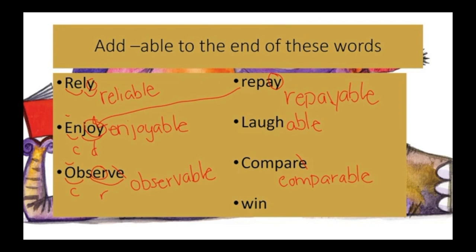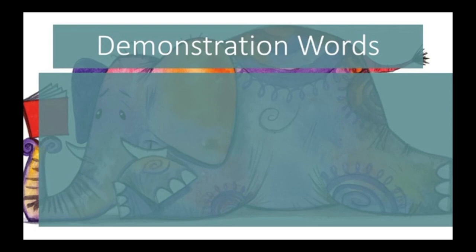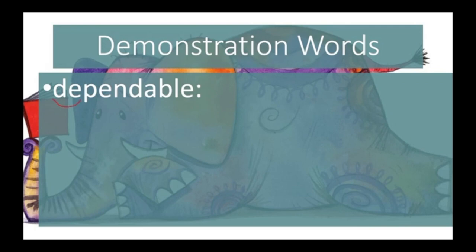For winnable, this one's tricky. The word win is a 1-1-1 word, so to add -ABLE I'm going to have to double the N: W-I-N-N-A-B-L-E. For our demonstration word dependable, I'm going to mark it as D-pend-able, boxing in the suffix on the end. D is an open syllable and pend is a closed syllable. So we have an open syllable, a closed syllable, and a suffix on the end.